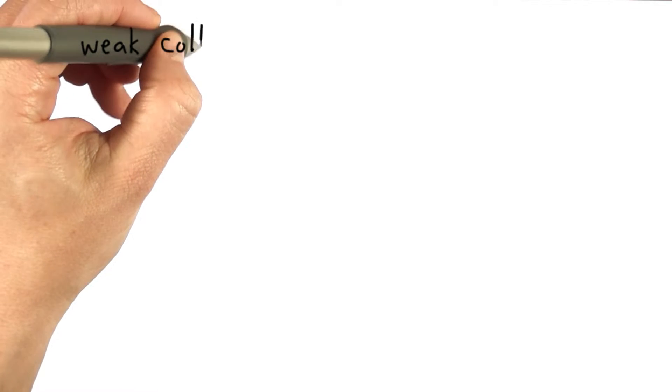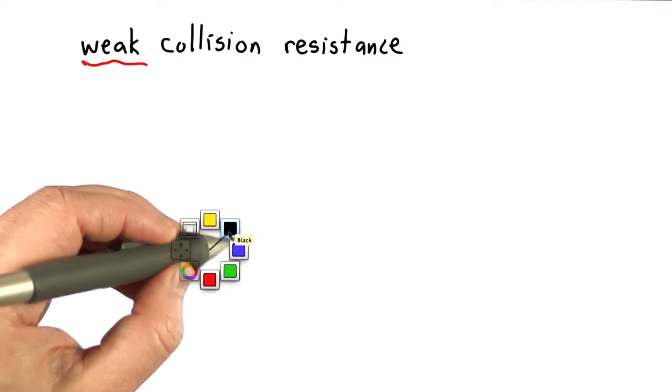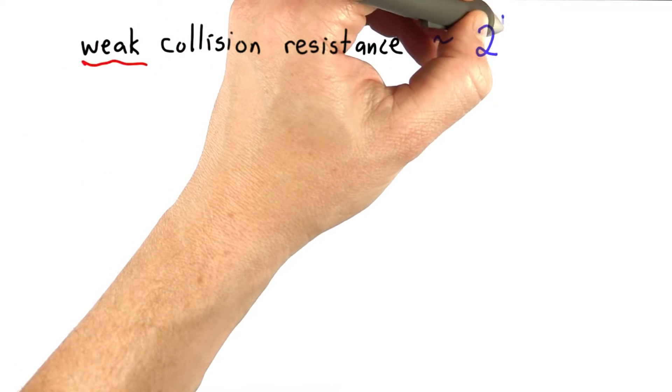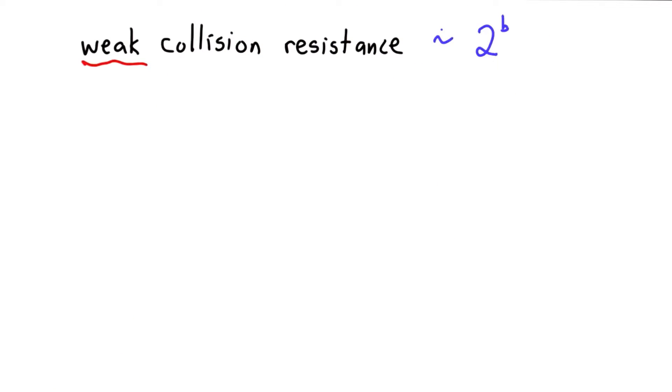The key point is that this was for weak collision resistance. For weak collision resistance, our assumption is an attacker needs to do about 2 to the b work, where b is the number of hash bits, to have a good chance of finding a collision.